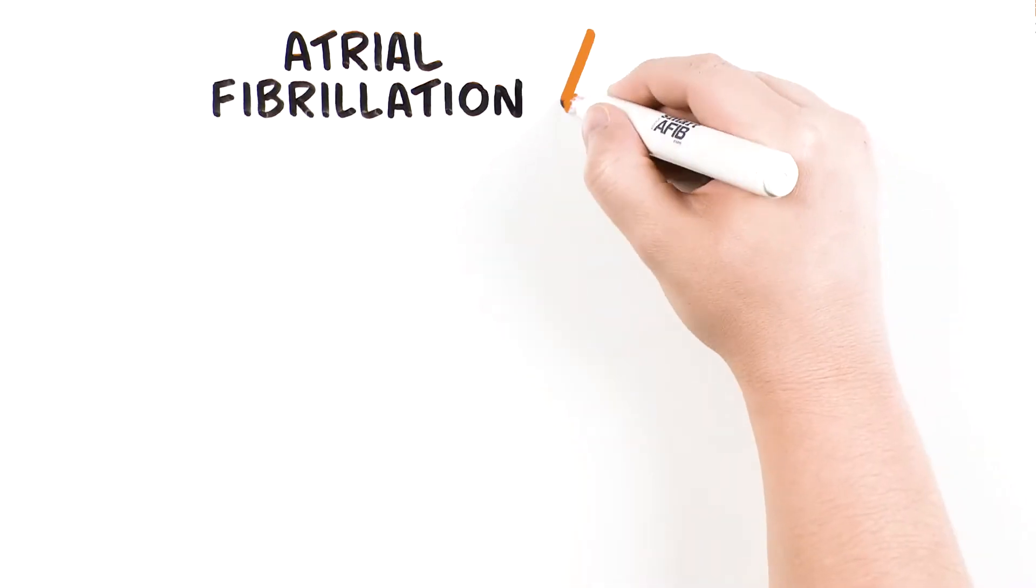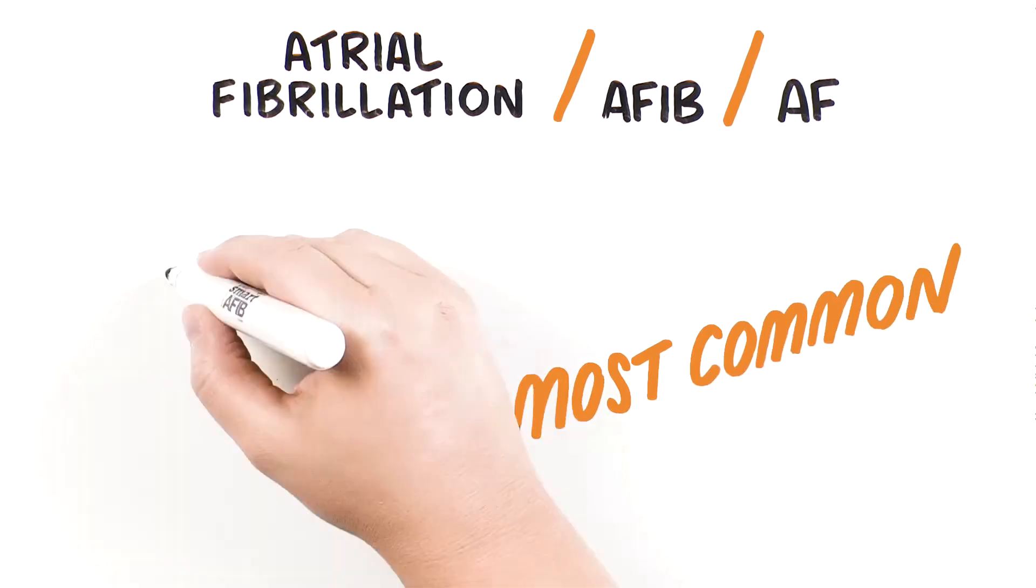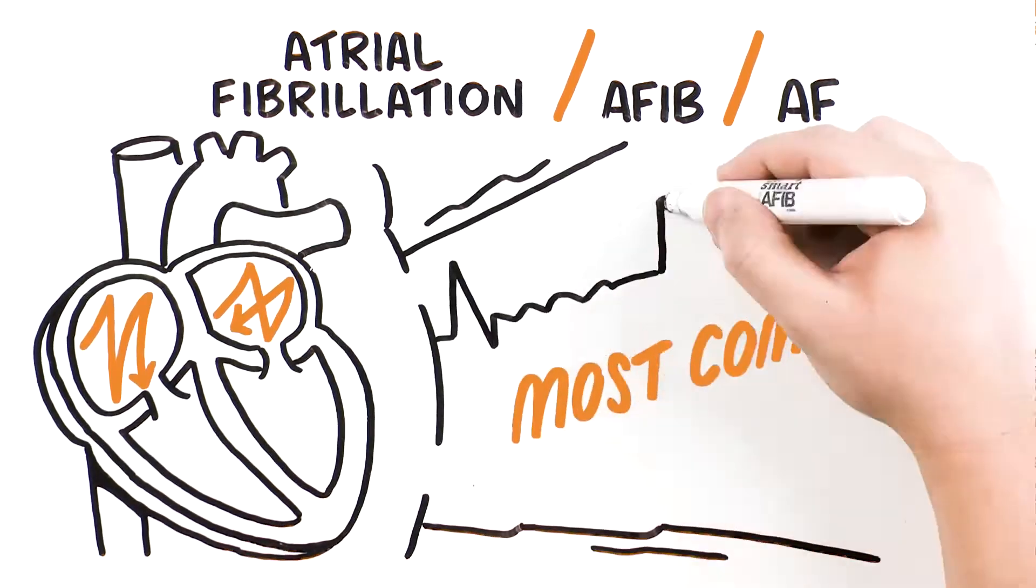Atrial fibrillation, sometimes referred to as AFib or AF, is the most common heart arrhythmia or irregular heartbeat.